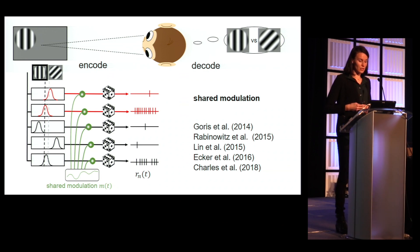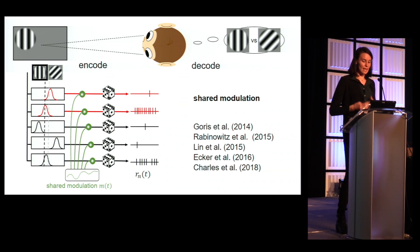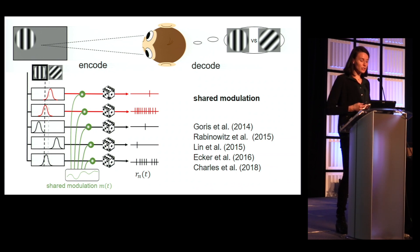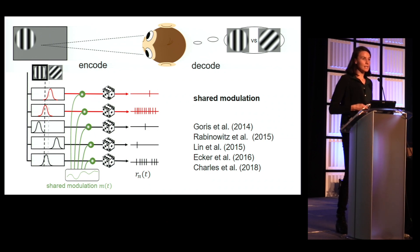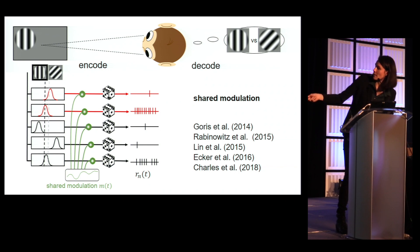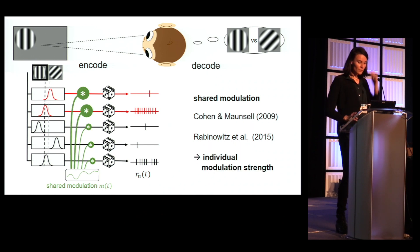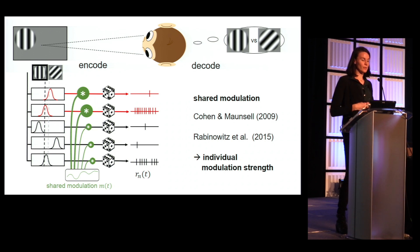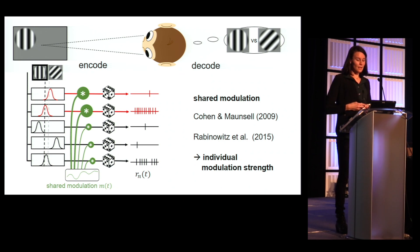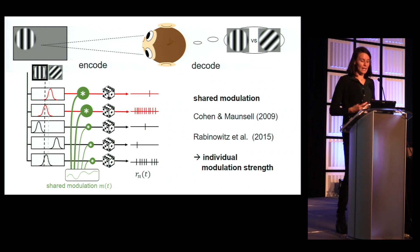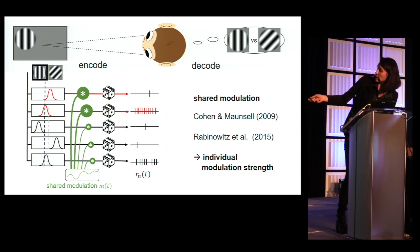Studies found that the trial-to-trial variance of neurons, given the same stimulus, exceeds the expected variance from a simple independent Poisson process. These additional fluctuations are mostly low-dimensional and multiplicative, suggesting that there is a shared modulation that varies the response of the neurons from trial to trial. In experiments by Cohen and Mansell, where V4 populations were recorded in a discrimination task, a follow-up analysis by Rabinowitz et al. fit such a shared modulation and found that the strength of the modulator varied across neurons.